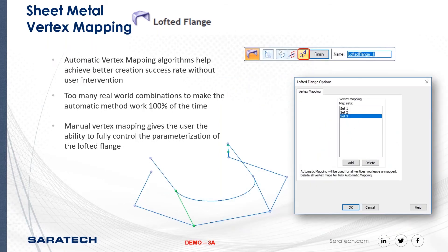The automatic vertex mapping algorithm helps achieve a better creation success rate without user intervention. You can see the lofted flange options — there are too many real-world combinations to make the automatic method work 100% of the time. Manual vertex mapping gives the user the ability to fully control the parameterization of the lofted flange.